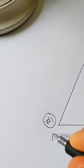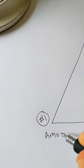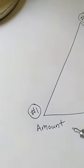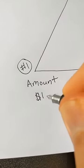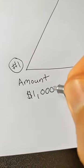On the first corner, you're going to write the amount of money that you desire. It can be any amount that you choose. For this example, we're going to write down $1,000.